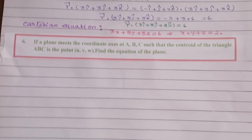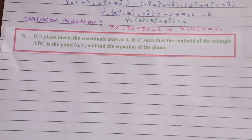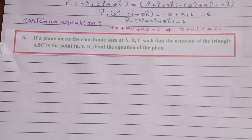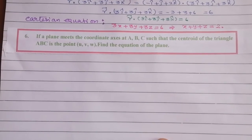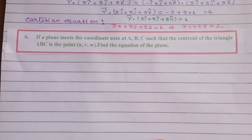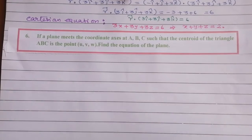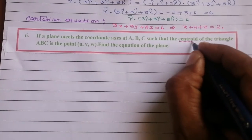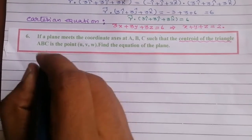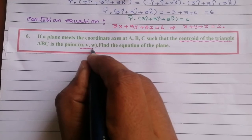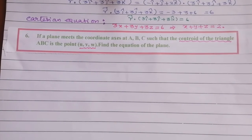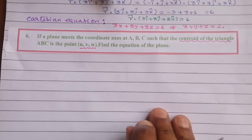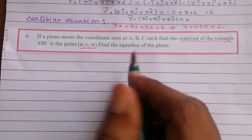The next question: if a plane meets the coordinate axes at A, B, C such that the centroid of triangle ABC is the point (u, v, w), find the equation of the plane. In this case we have intercept points on the coordinate axes.